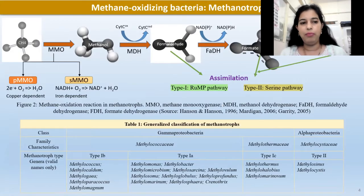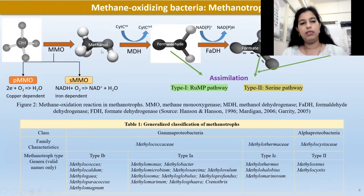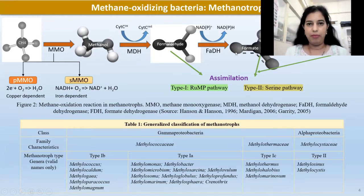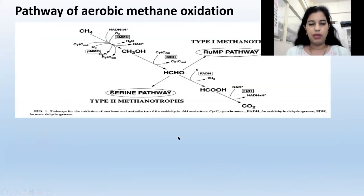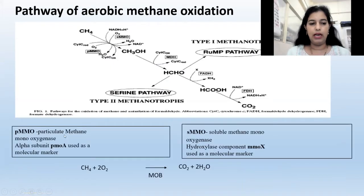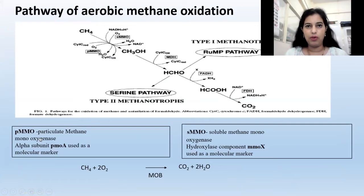Now let's understand more about methane oxidizing bacteria. Methane is the simplest hydrocarbon with one carbon and four hydrogen atoms. Methane is further oxidized to methanol, formaldehyde, formate, and then to carbon dioxide. Methanotrophs are further classified into type 1 and type 2 methanotrophs based on their various characteristics and phylogenies. There are two key enzymes: particulate methane monooxygenase and soluble methane monooxygenase.